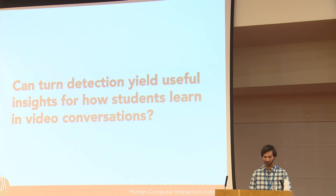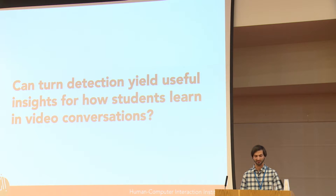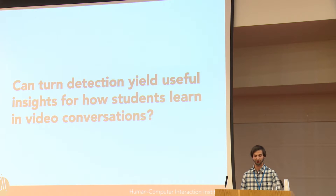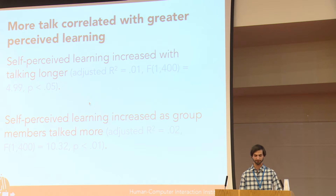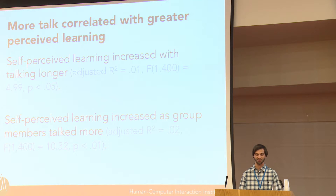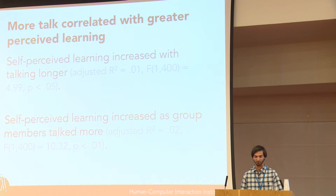Prior research has shown that giving feedback to participants about their group's conversational dynamics in face-to-face conversations can lead to participants changing their behavior, resulting in higher performing and more satisfied groups. Given these results, we were interested to know if turn detection might yield useful implications for how students learn from talking with peers. We found that self-perceived learning increased for learners who contributed longer duration turns, and also increased as other group members talked more. This suggests learners felt they learned more not only through speaking and sharing knowledge, but through other participants speaking as well. Systems like Talkabout could be designed to encourage learners to speak longer and listen to others more closely.